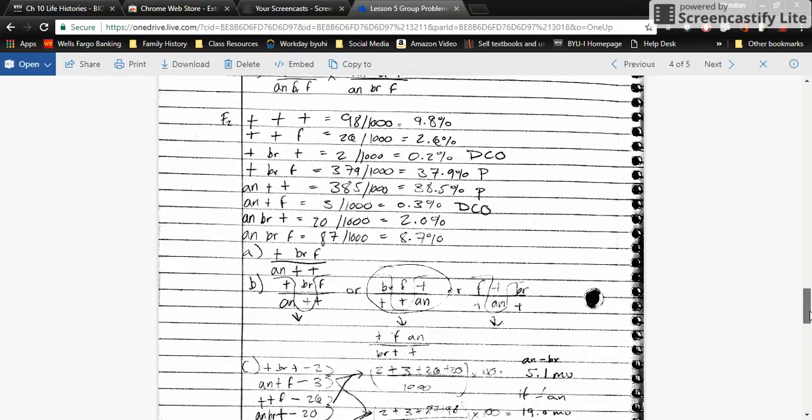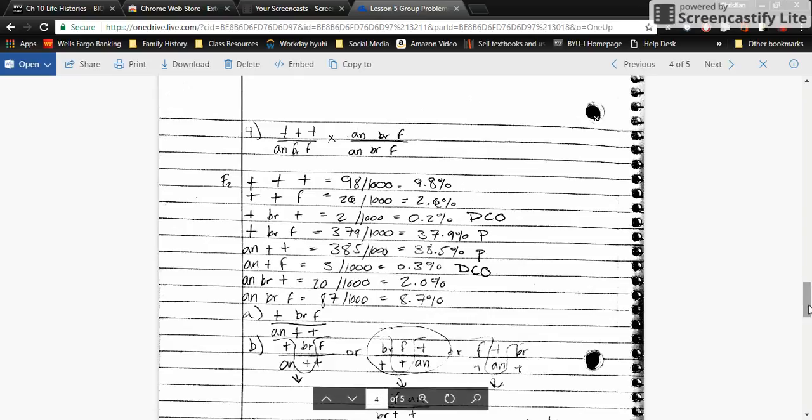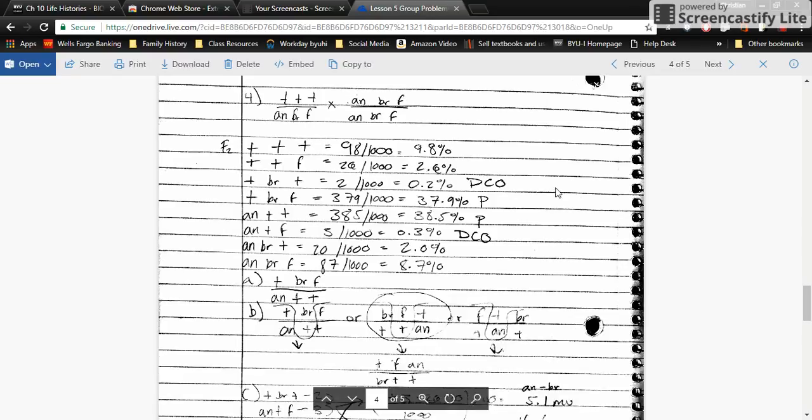Moving on to question four, same thing: we've got wild wild wild crossed with a homozygous recessive individual with A, B, R, and F. These are the percentages we get. Again, to find the allele order, we look at the most numerous genotypes: wild BR wild and AN wild F. Just combine those two—that's the allele order right there.